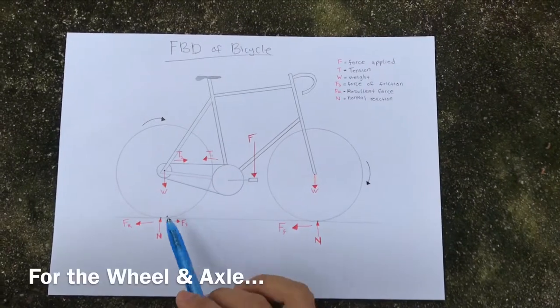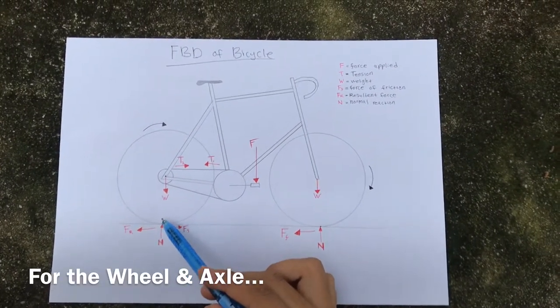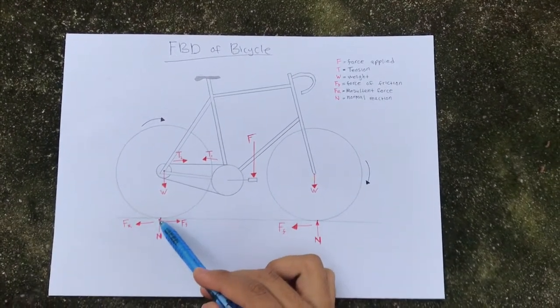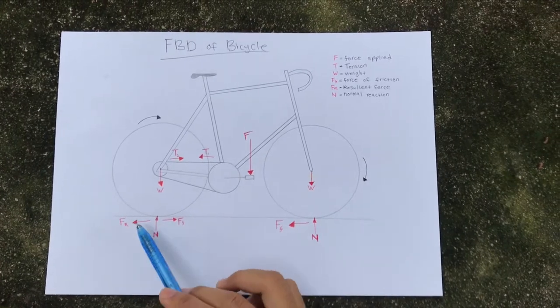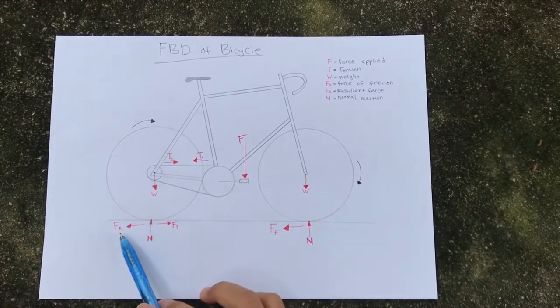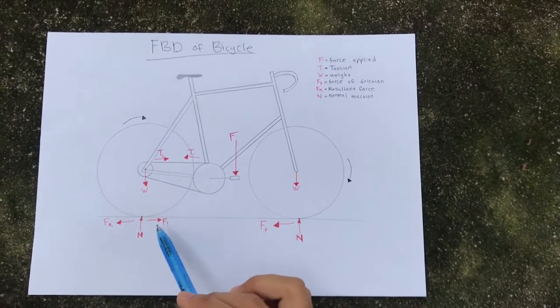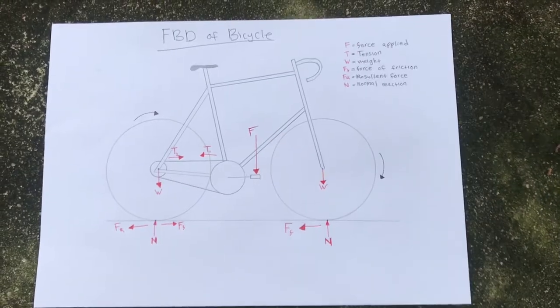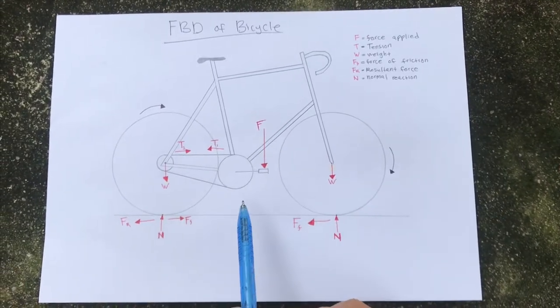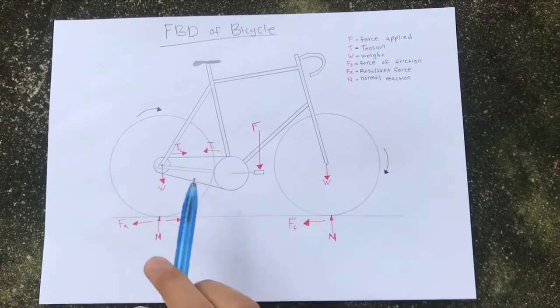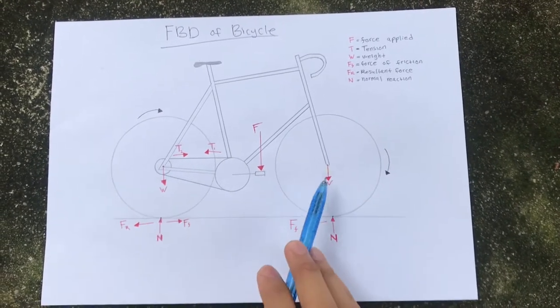On the rear wheels, we got the contact point between the tire and the ground. At the contact point, we have three forces which is the motion force, resultant force, the frictional force and the normal reaction. The overall weight of bicycle and the rider exerted on both axles which we can see here.